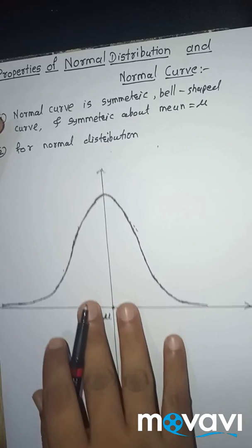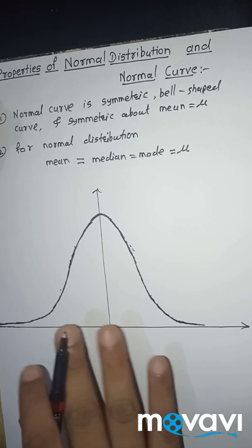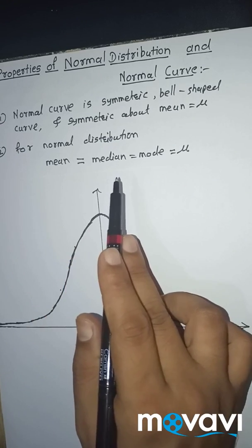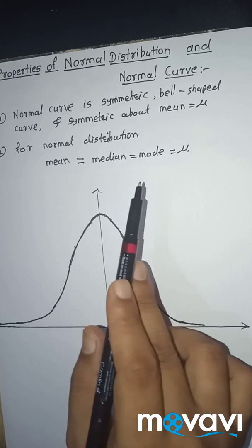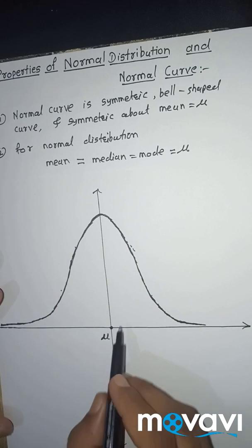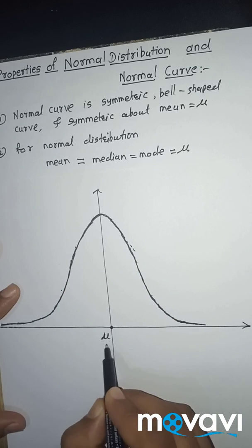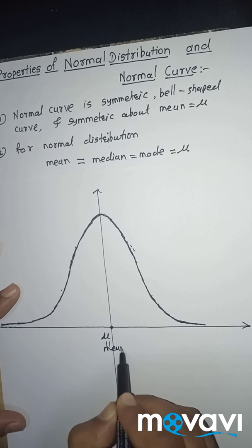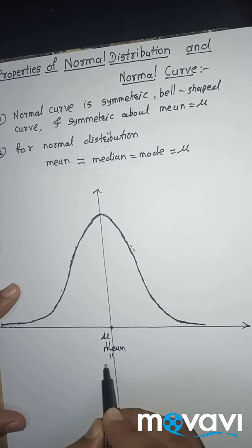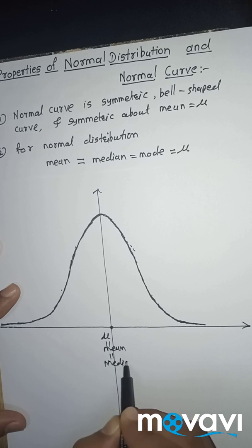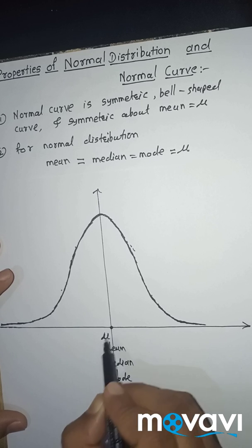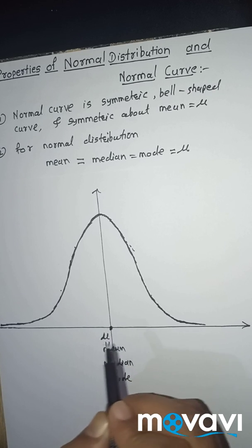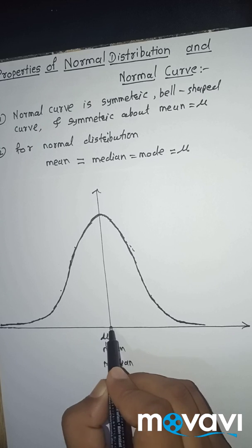Second property: for a normal distribution, mean is equal to median is equal to mode, and the notation is μ. Here is our mean μ, and this is equal to the median and this is equal to the mode. So here is our mean, median, and mode of the normal distribution.